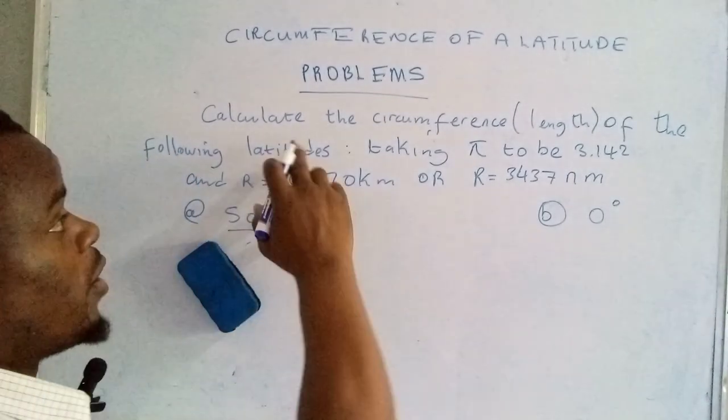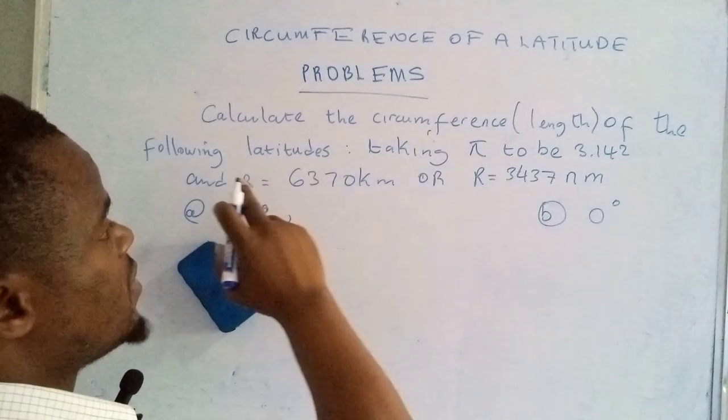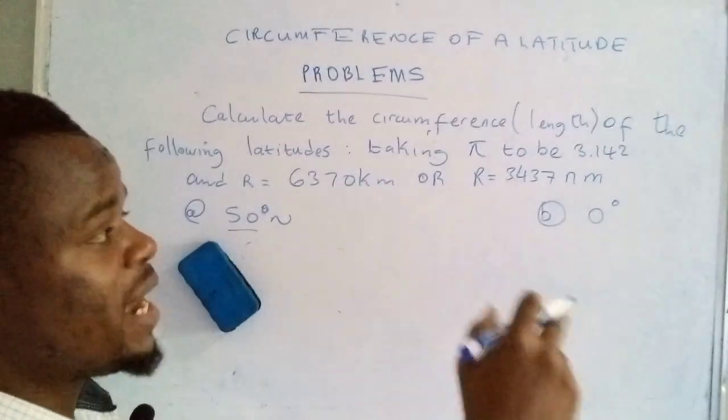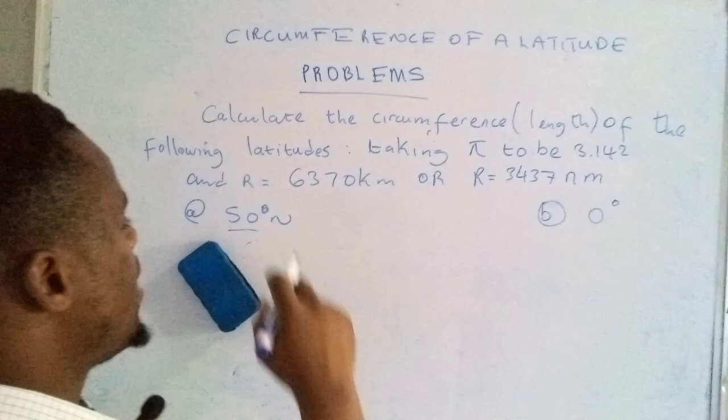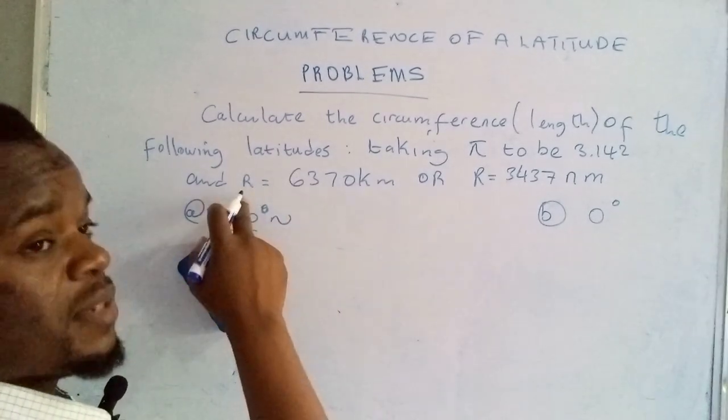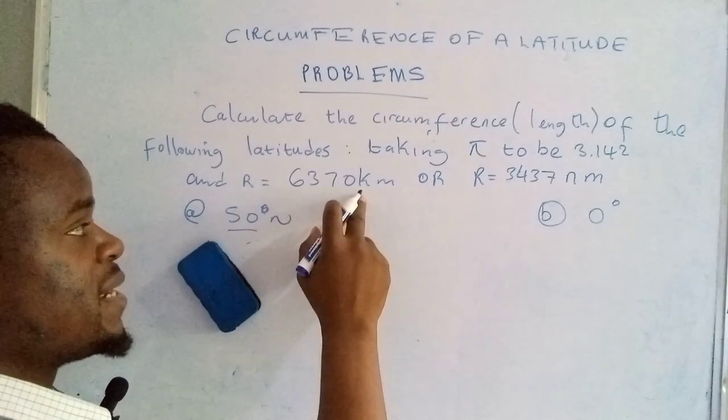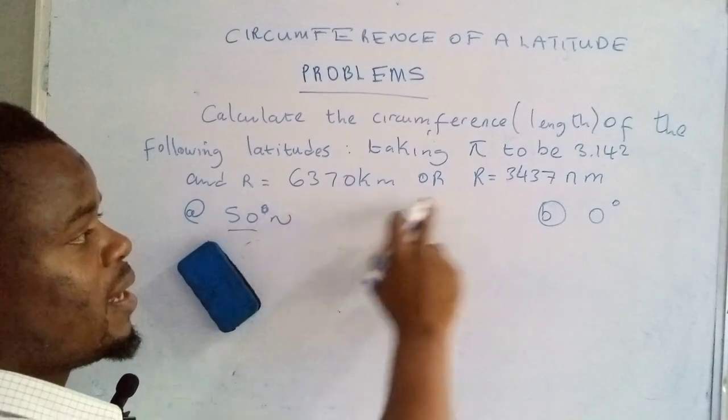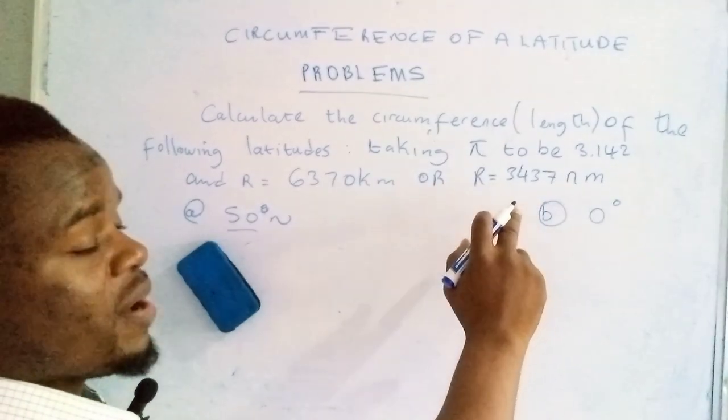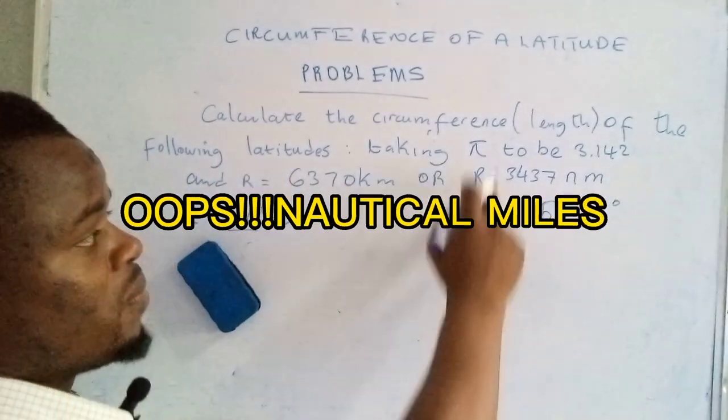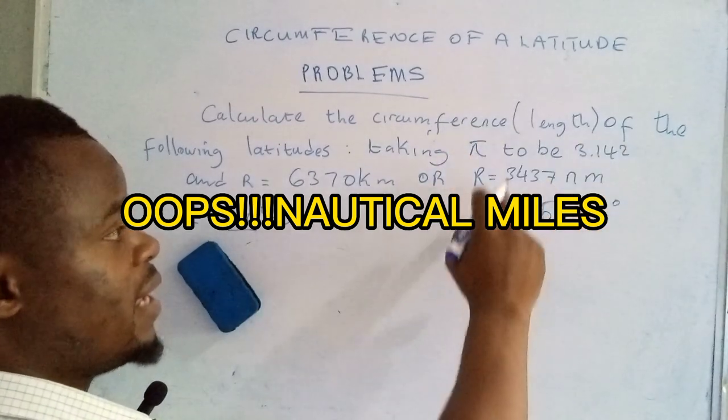Let's look at this example. Calculate the circumference of the following latitudes, taking π to be 3.142 and the radius of the earth, denoted by the capital letter R, to be 6,370 kilometers or R = 3,437 nautical miles.